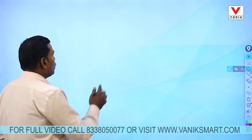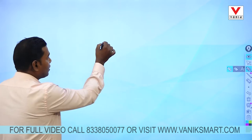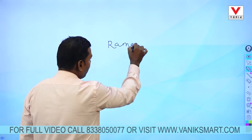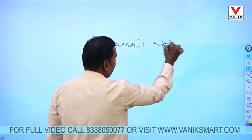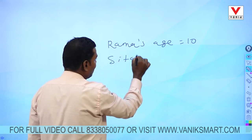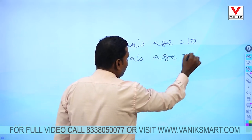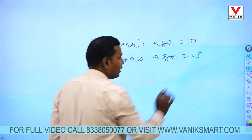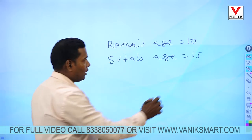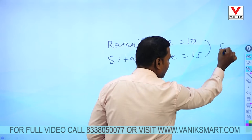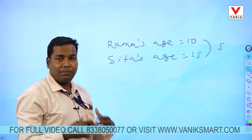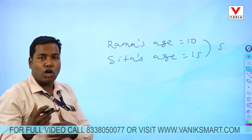Come to the concept. Suppose Rama's age is 10 and Sita's age is 15. The difference between Rama and Sita's age is 5. This question can be expressed in other ways.